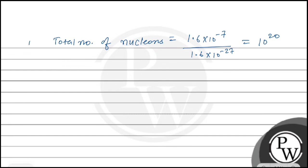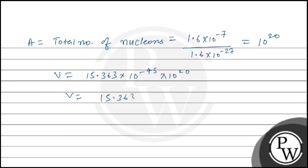Now substituting A = 10²⁰ into the volume expression: V = 15.363×10⁻⁴⁵ × 10²⁰ = 15.363×10⁻²⁵ m³. Now we can calculate the density of the nucleus.